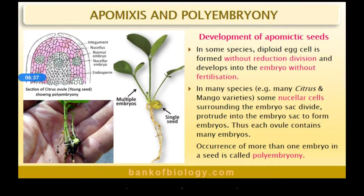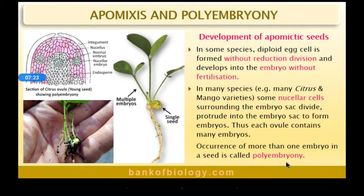Thus each ovule can contain many embryos. Multiple embryos are formed in one embryo sac or ovule. Since more than one embryo is present, this is called polyembryony. The occurrence of more than one embryo in a seed is called polyembryony.